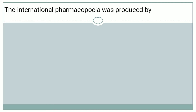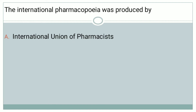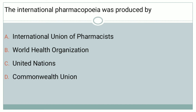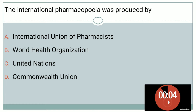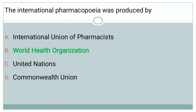The next question: The International Pharmacopeia was introduced by — Option A: International Union of Pharmacists, Option B: World Health Organization, Option C: United Nations, Option D: Common Wealth Union. The right answer is Option B, that is the World Health Organization introduced the International Pharmacopeia.